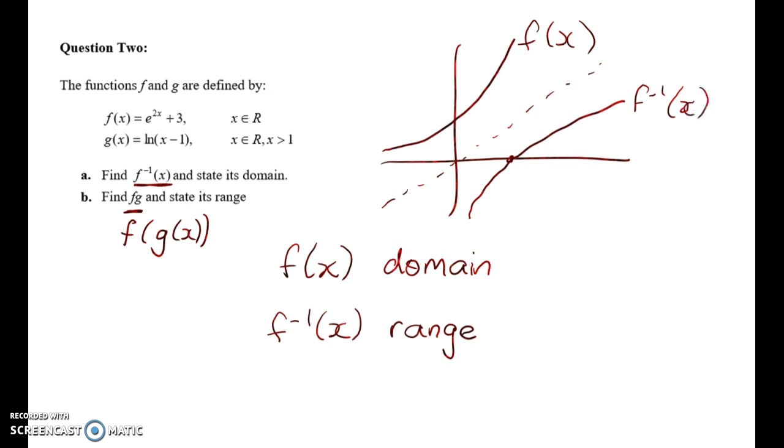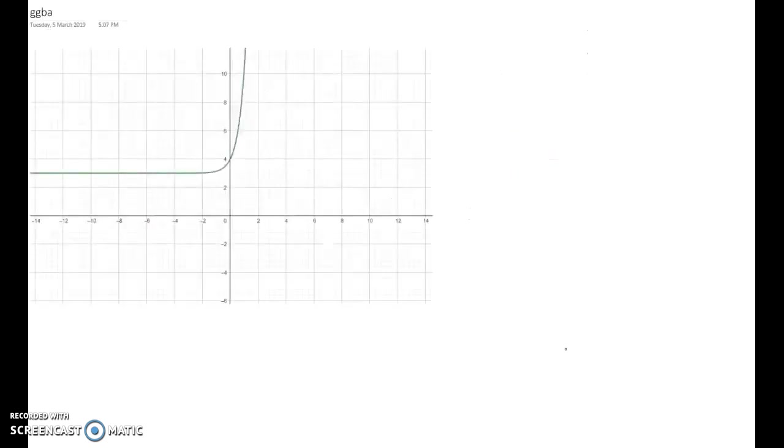Because it's a reflection in the x equals y line, basically what we do to find an inverse is we swap the x and y values over. Okay, so the next thing we're going to look at is the graph of this one here, so this is e to the power of something plus 3, so it's got a vertical shift up. And here's the graph here.